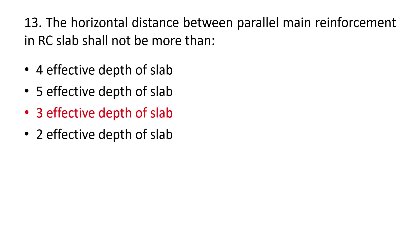Question 13: As per IS 456:2000, the horizontal distance between parallel main reinforcement bars in an RC slab shall not be more than three times the effective depth of the solid slab or 300 mm, whichever is lesser.